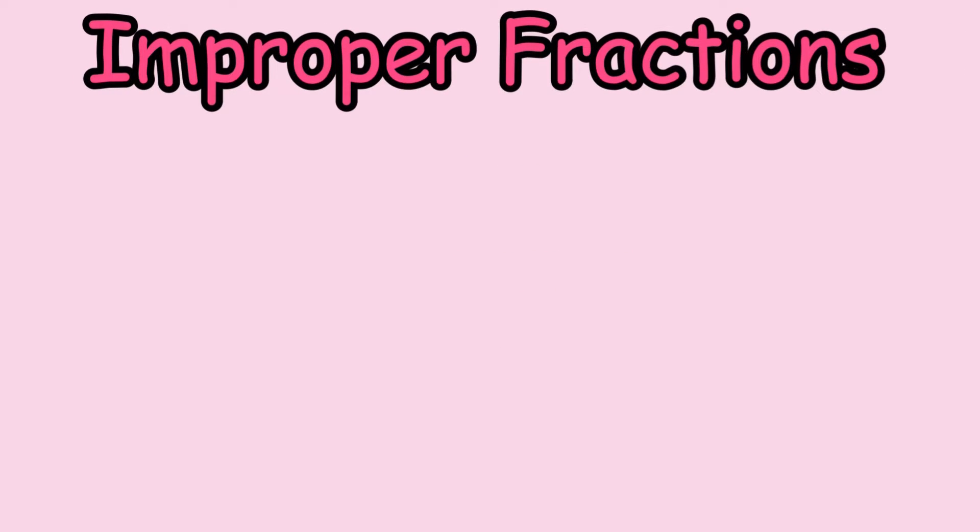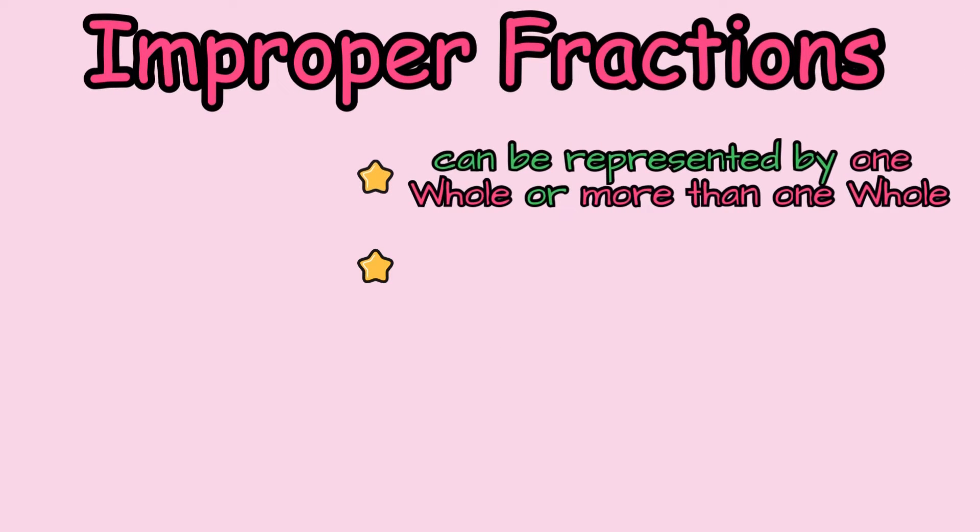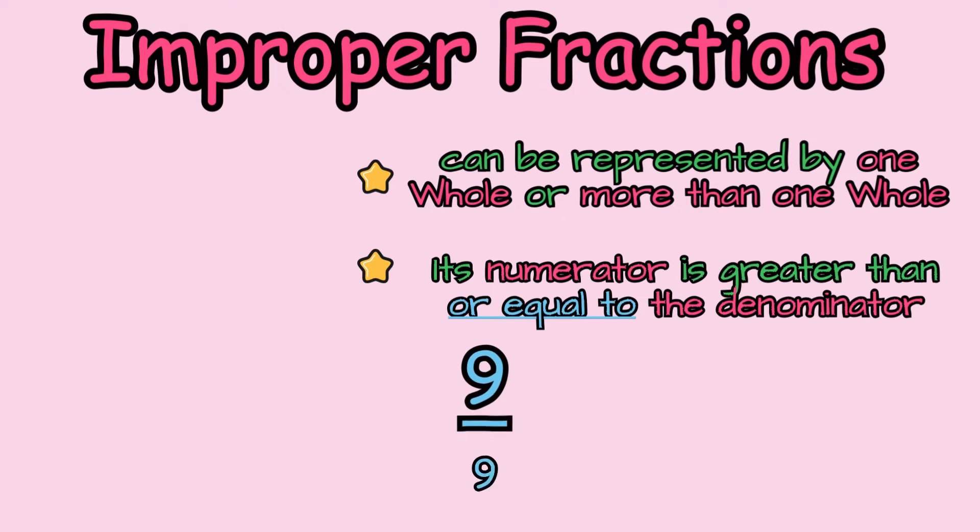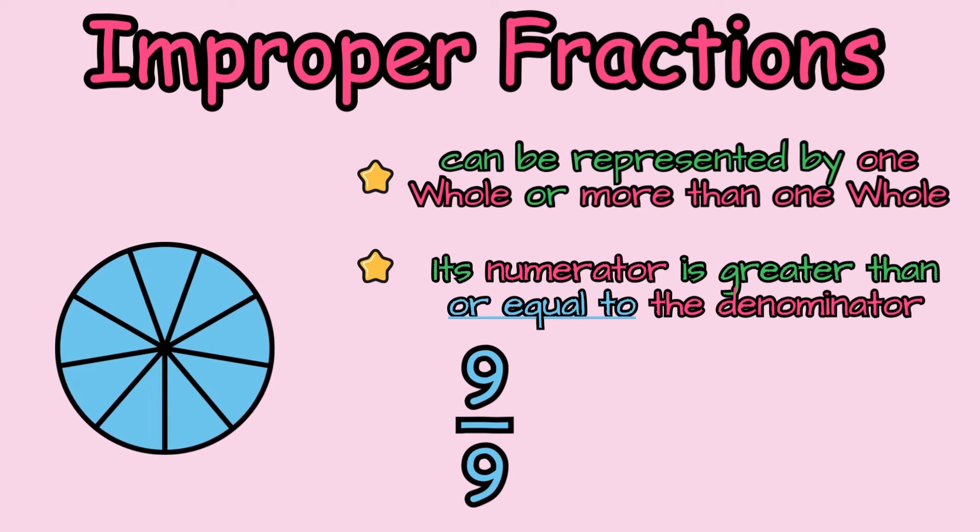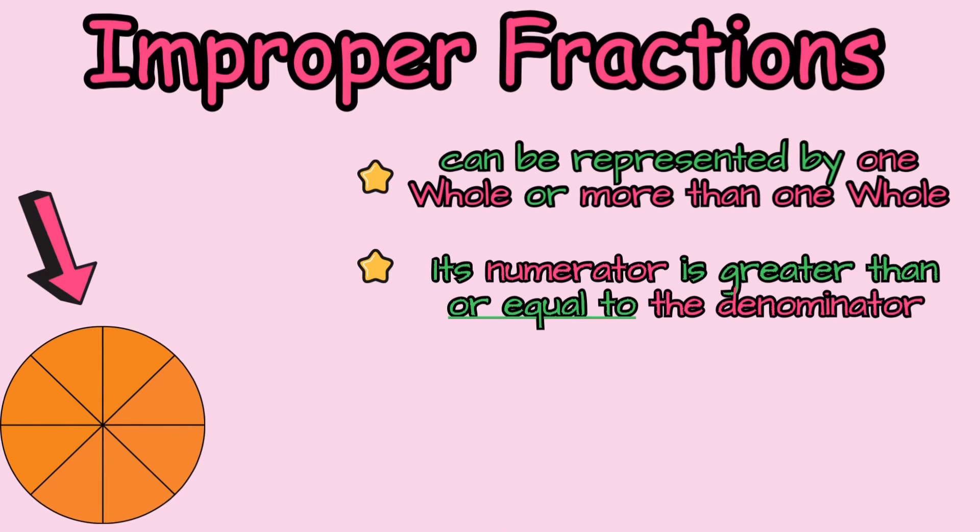Improper fractions. These types of fractions are represented by only one whole or more than one whole. Also, its numerator is greater than or equal to the denominator. Here we have one example. 9 ninths means that our whole shape is divided into 9 equal spaces and the 9 equal spaces are shaded.